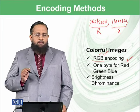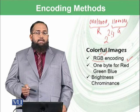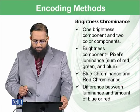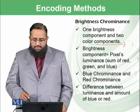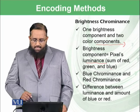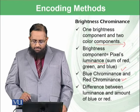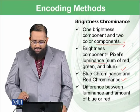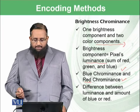With RGB you can represent two raised to the power 24 colors, which are more than 16 million colors. There is another method called the brightness-chrominance method. It uses one brightness component and two color components. The brightness component is the pixel's luminance — the sum of red, green, and blue — which represents the sharpness in the image. Then there are two chrominance values: blue-chrominance and red-chrominance. The difference between luminance and the amount of blue is called blue-chrominance, and the difference between luminance and the red color is called red-chrominance. These three components are used in the brightness-chrominance method.